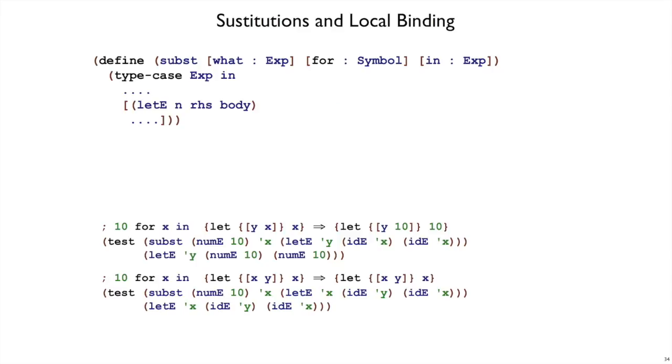So let's look at actually implementing subst then with those examples. I've copied a couple of the examples or similar examples at the bottom to help us think about this. So inside of subst we have a new let e case. We've got n, right hand side, and body.